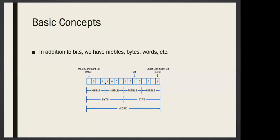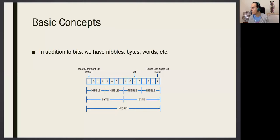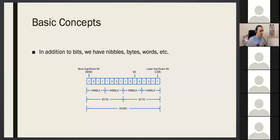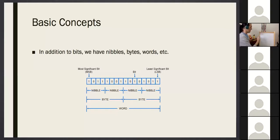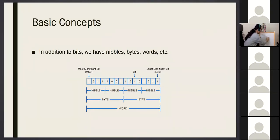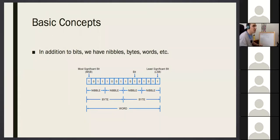If a nibble is four bits long, the numbers you can create with a nibble are from zero to 15. How many different numbers can you create with a nibble? Sixteen different numbers. Actually, they are the digits of hexadecimal — I'll cover that in a couple of slides.